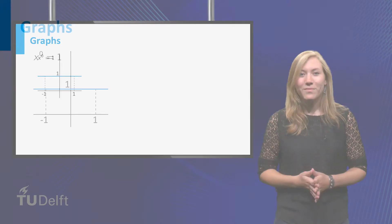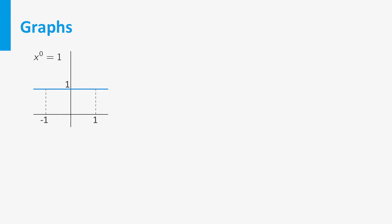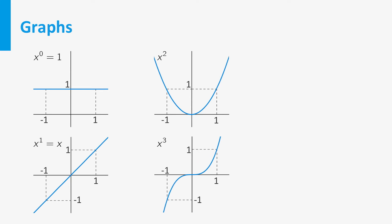Let's look at some graphs. x to the power 0 is just a constant 1 and x to the power 1 is just x. So their graphs are straight lines. The graph of x squared is a parabola. The graph of x cubed looks like this. And here we see the graph of x to the power 4 and x to the power 5.